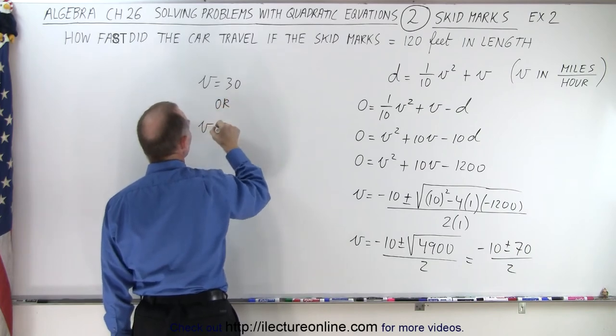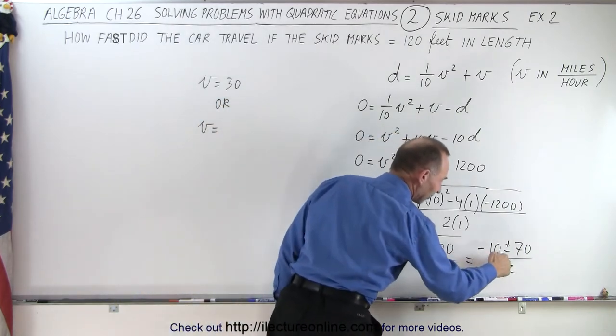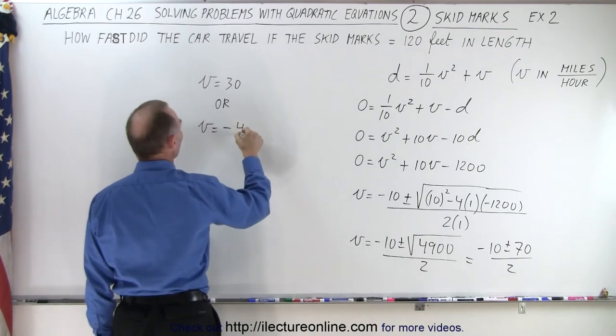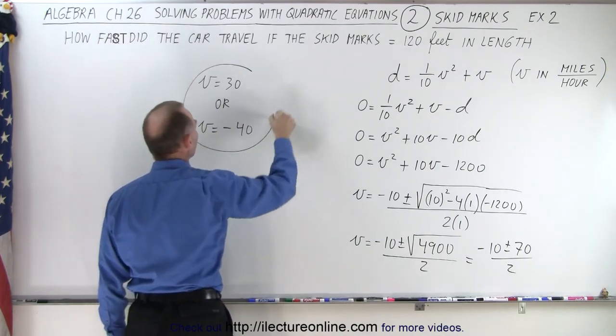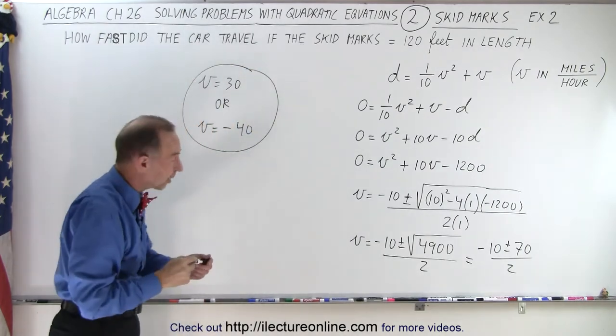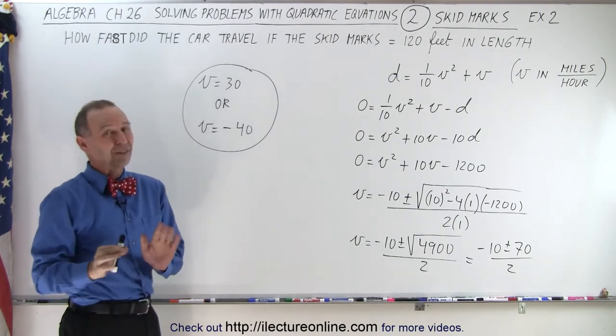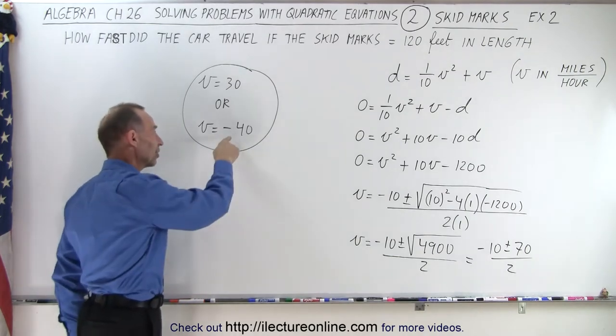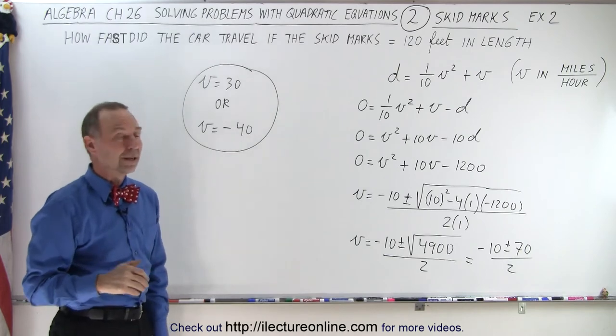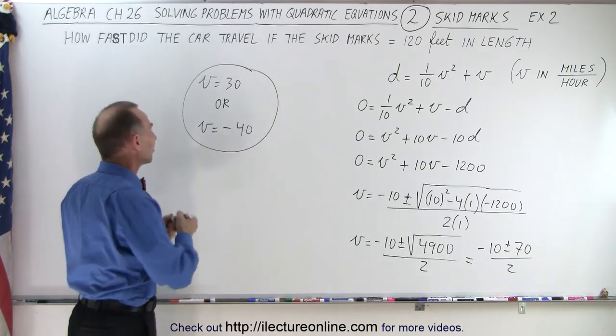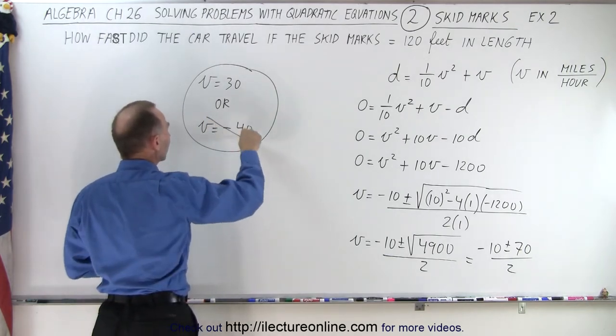Or v is equal to -10 - 70 is -80 divided by 2 which is -40. So I have two possible solutions for our velocity of the car. Now one of them doesn't make a lot of sense. I don't think the car was going at -40 miles per hour. So that's not a reasonable answer. We can simply get rid of that.